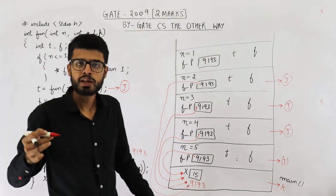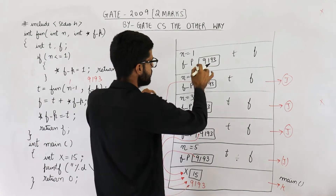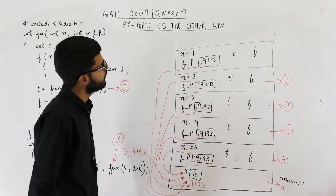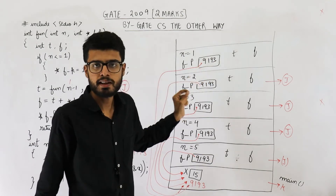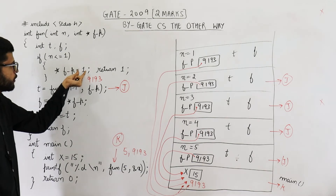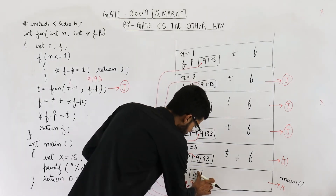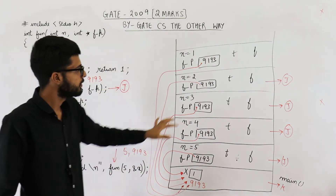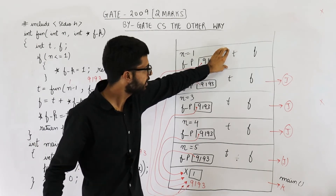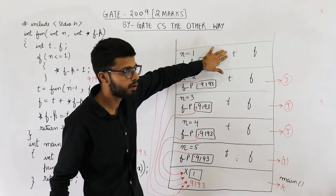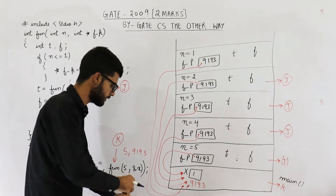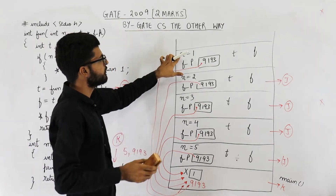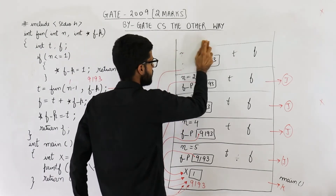Inside the if block: *fp = 1. fp is 9193, so the value at address 9193 — which was x=15 — is now updated to 1. The next line says return 1. Because we executed the return statement, this activation record is popped from the stack. The value 1 is returned to the calling function.